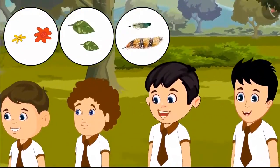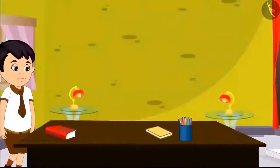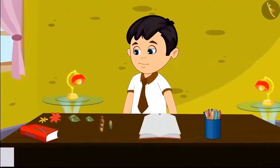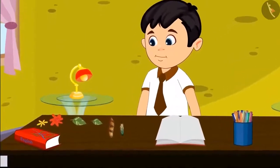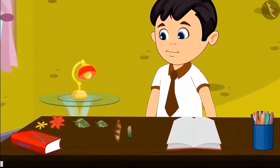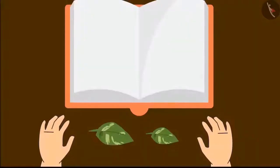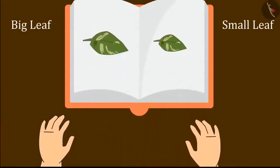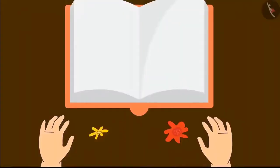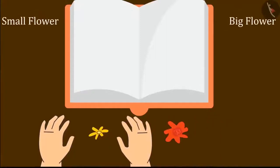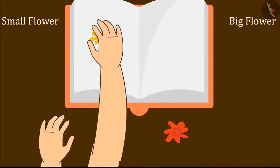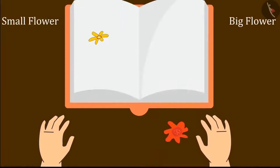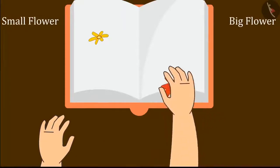When Chotu reached home, he took out his copy and brought everything to stick in his notebook. First, I will paste the leaves — here are the two leaves. We'll put the big leaf here and the small leaf here. Chotu pasted both the leaves. Now he thought of pasting the flowers: this little flower, let me put it here, and this big flower, here.